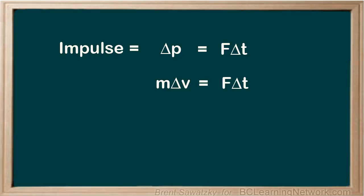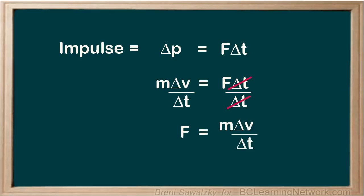Showing how the impulse equation must be true is pretty easy. If we divide both sides of this equation by the ΔT, we end up with: what is the change in velocity over the change in time? Think back to your kinematics — the rate of change in velocity is acceleration. So basically what we're saying is that F equals ma, and this should look familiar and very valid.